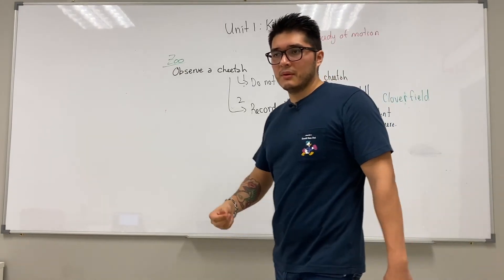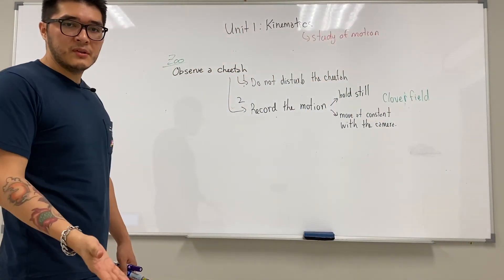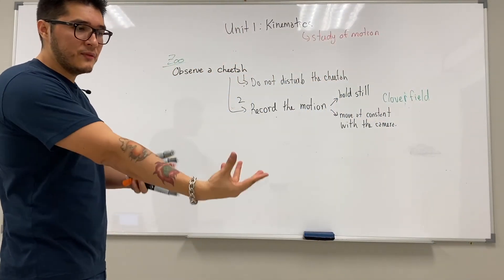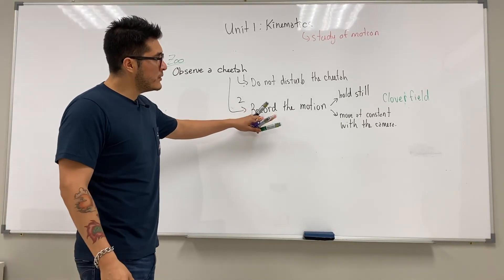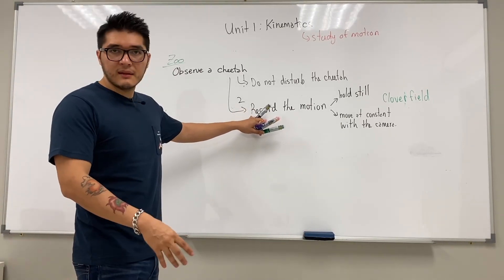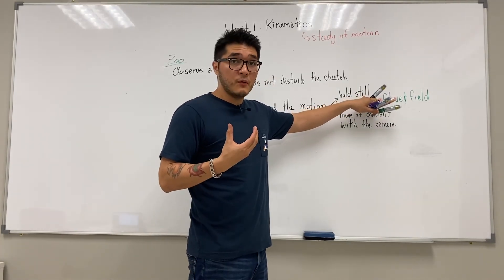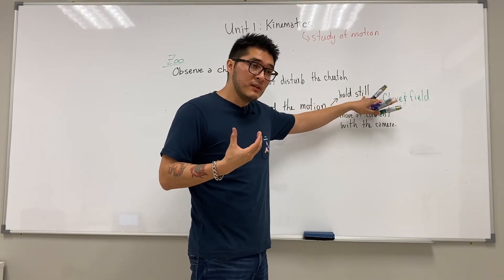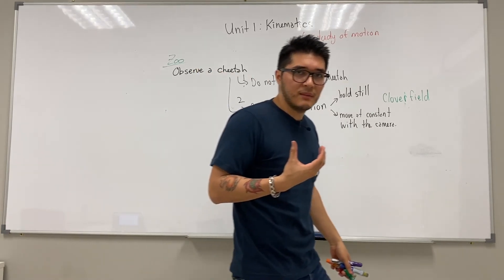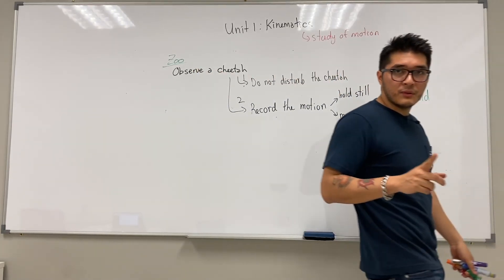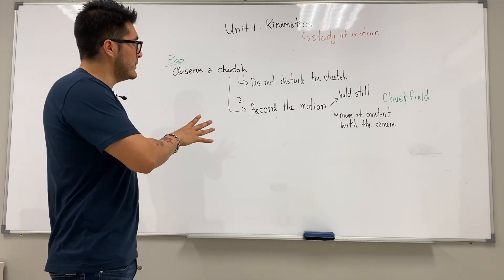So those are pretty easy rules to observe the cheetah at the zoo. Don't disturb it — you don't want to influence the system. You want to be an observer, or you want to record the motion. Take a cue from Cloverfield — hold the camera still. Or if you do need to move, you could get a rolling cart that goes at a steady pace. Those are the things we need to keep in mind in order to study the cheetah.